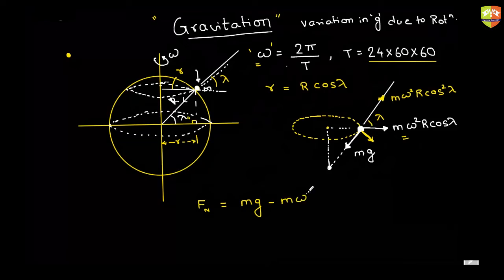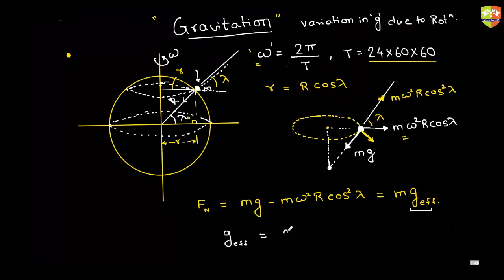The net force toward the center equals mg minus m omega squared R cos²(lambda), and we call this m times g_effective. Therefore g_effective equals g minus omega squared R cos²(lambda), where lambda is the latitude angle. This is how you get the variation of g with respect to the latitude angle and the rotation of the Earth.